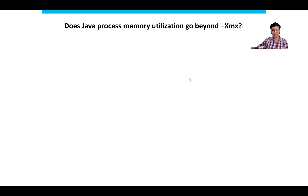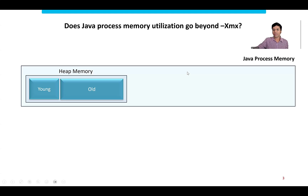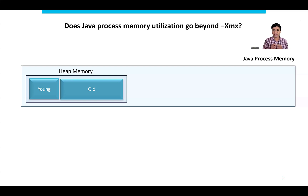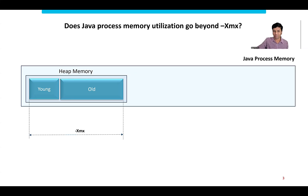To find the answer to this question, you need to look into the JVM internal memory regions. The first region: the Java process has a region called heap memory. This is where the young generation and old generation is present. As a developer, when I create a new object, that object goes into the young generation. If it lives for a longer period, it gets promoted to the old generation. When I set XMX as 6 GB, I'm actually setting the size of this young generation and old generation alone.